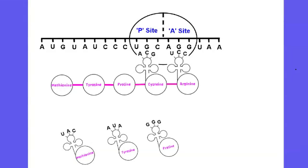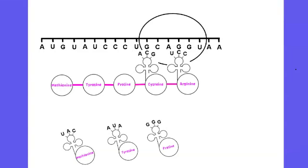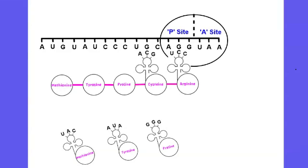The process is somewhat repetitive and continues until the ribosome encounters a stop codon on the mRNA. The stop codon does not code for an amino acid, but merely indicates where the process of translation should terminate.